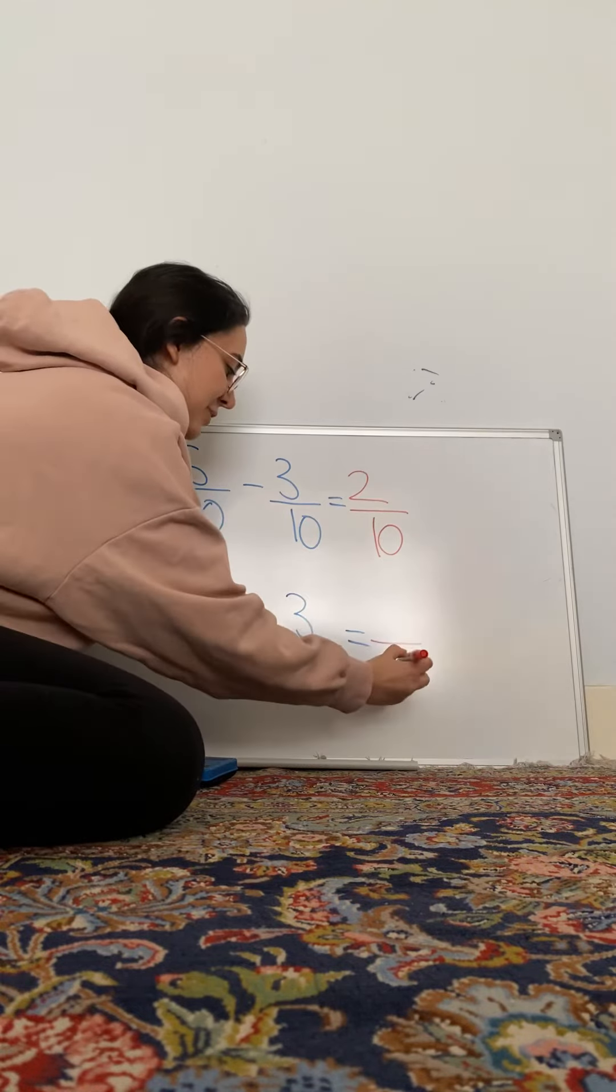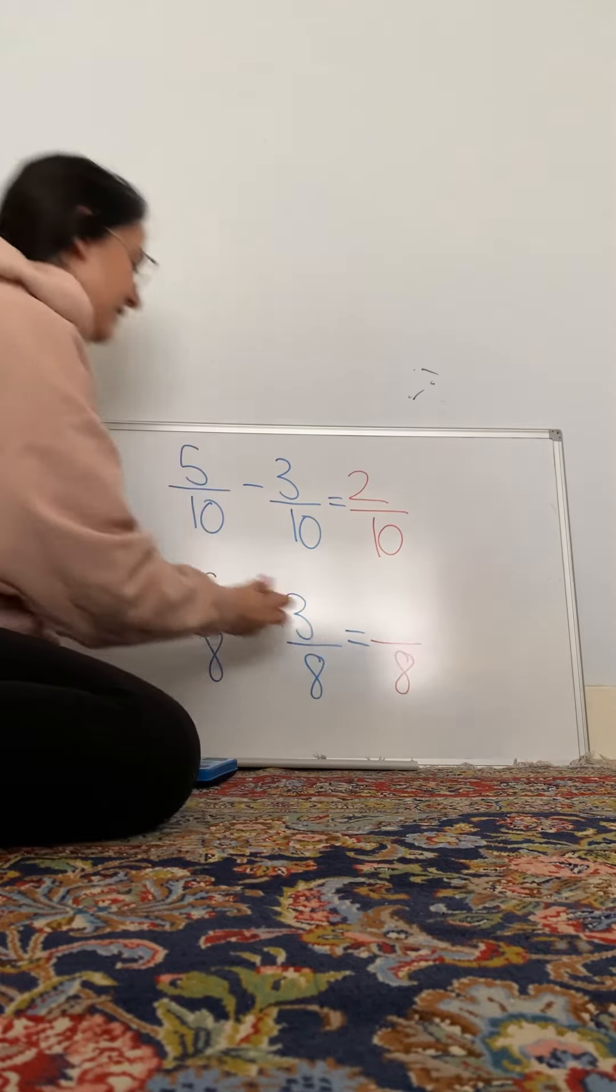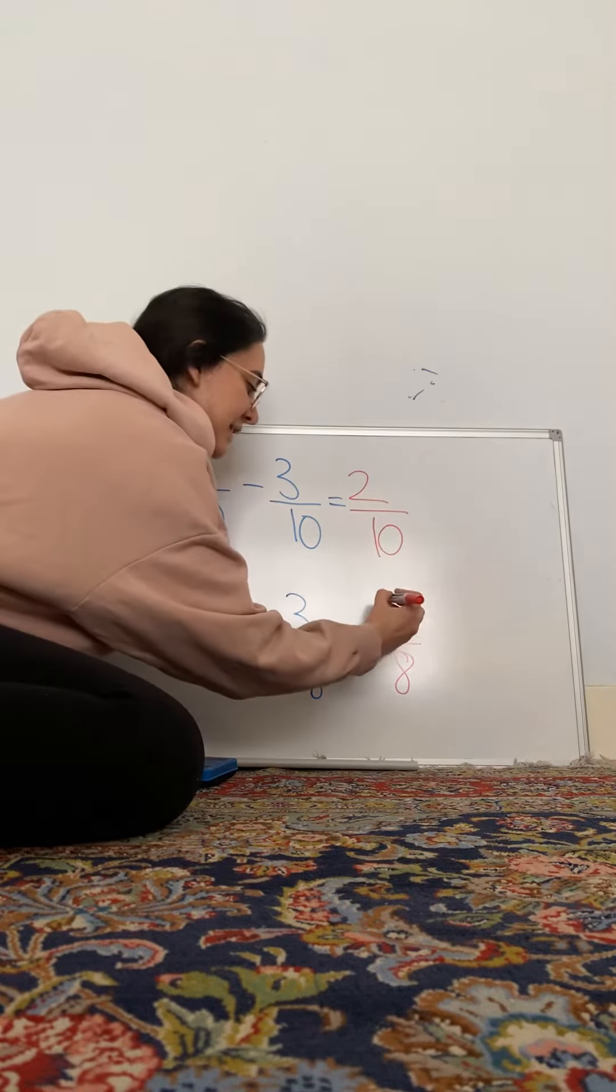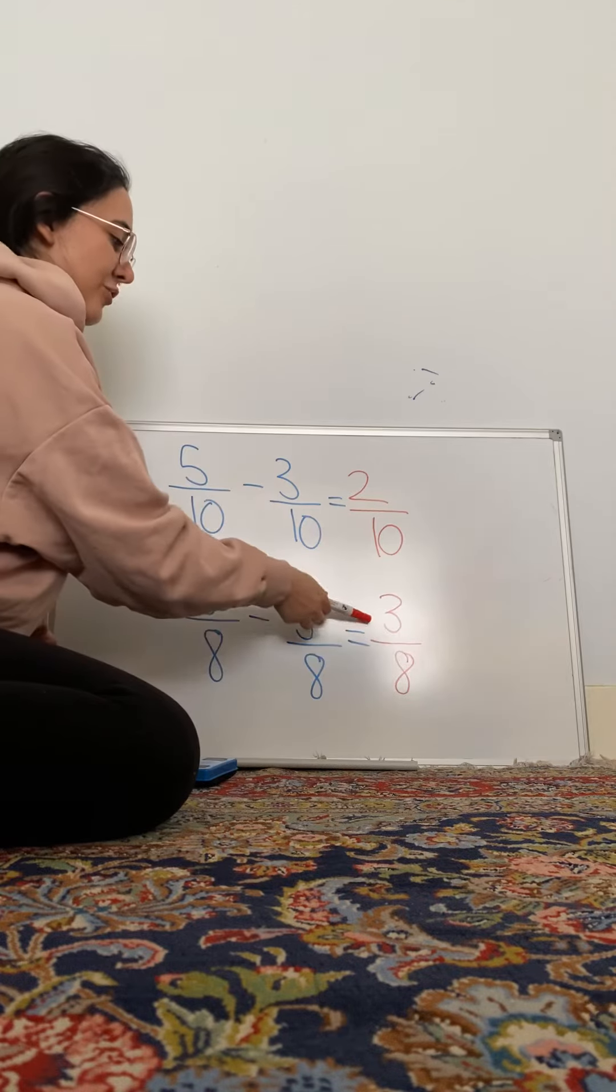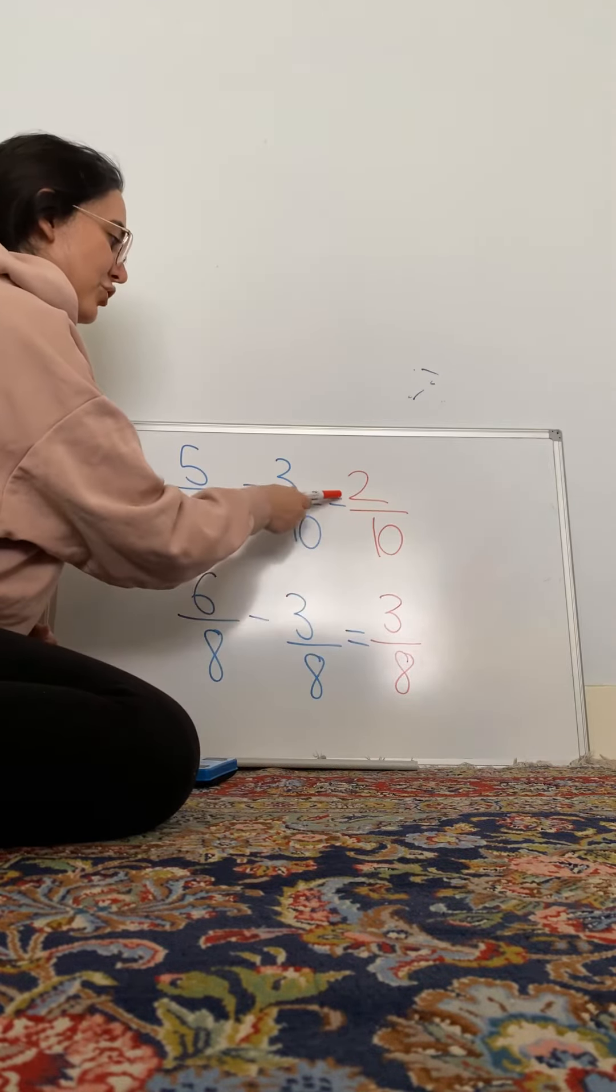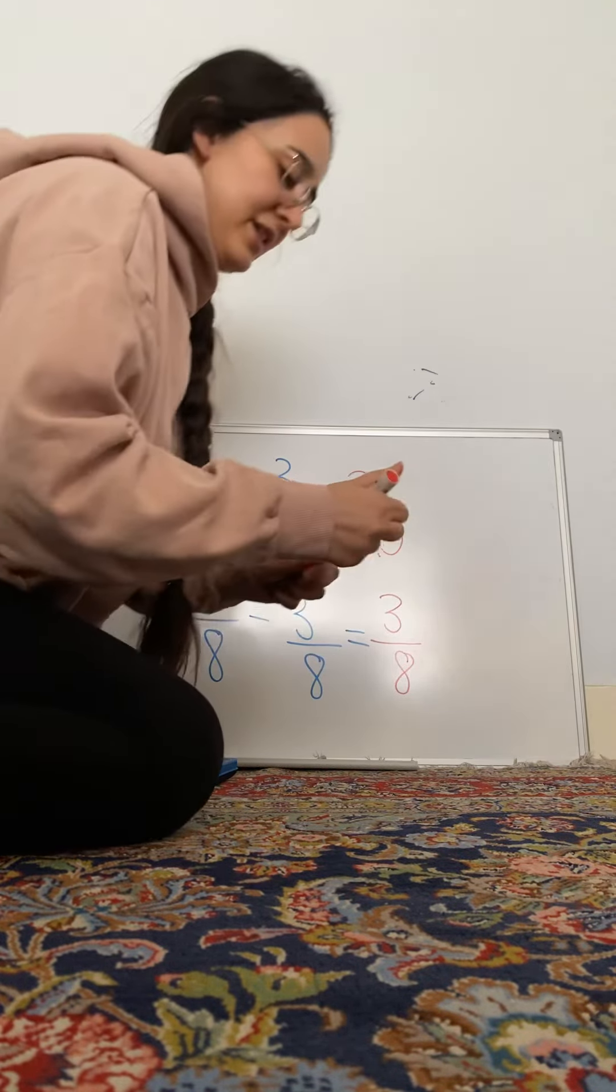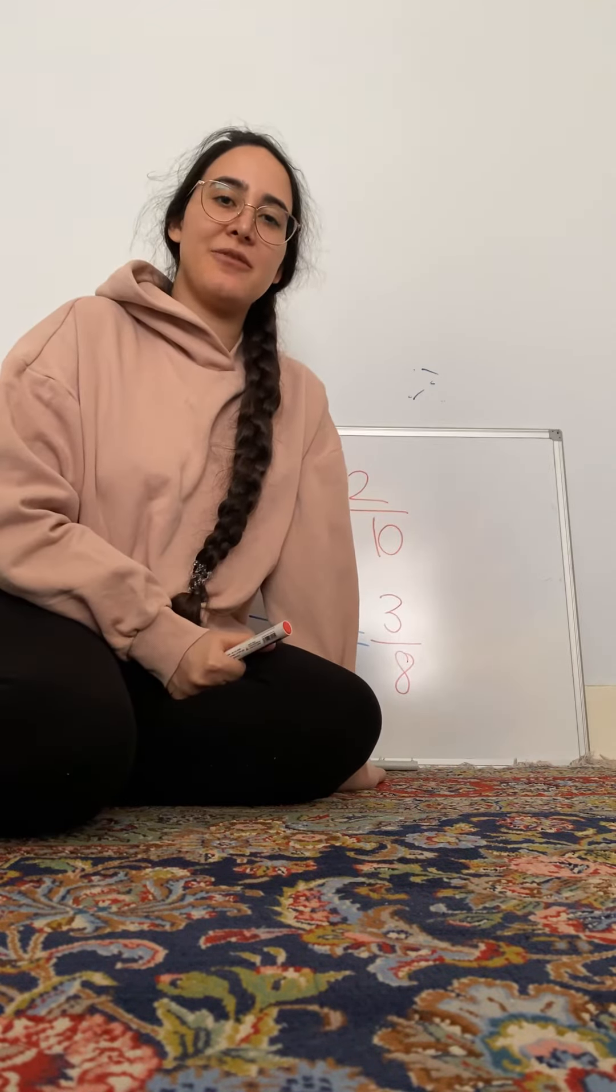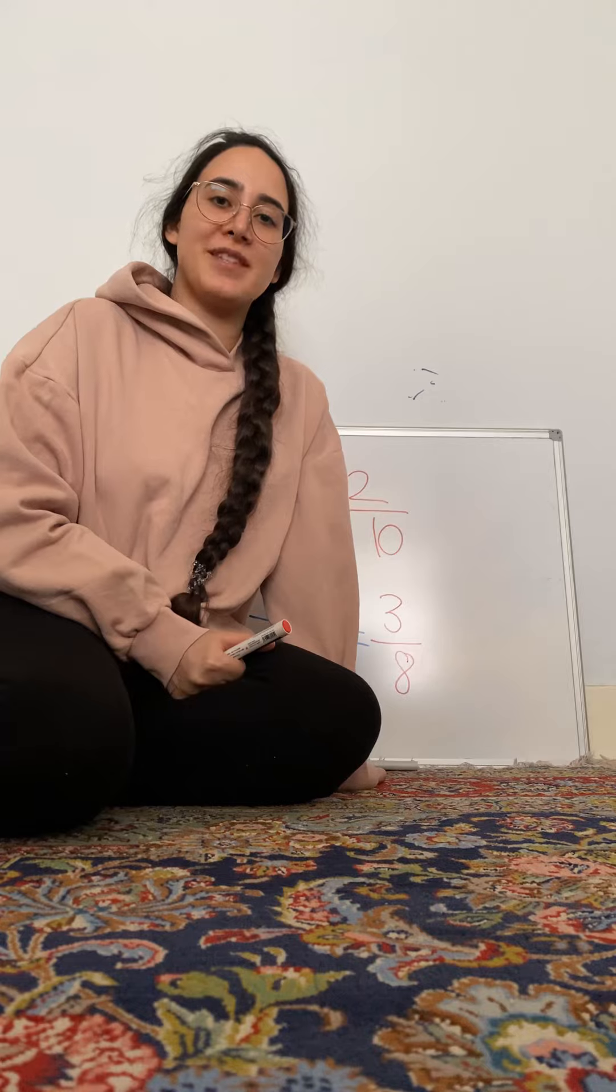Remember, let's put our denominator down first. 8, 6 take away 3 is? Good, it is 3. So 3 eighths and we've got 2 tenths here. And that is all for our lesson today on subtracting fractions with the same denominator.